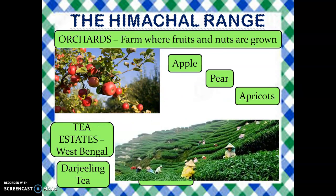The Himachal Range is also famous for orchards. Orchards are farms where fruits and nuts are grown. Famous apple, pear, and apricot orchards are found in the Himalayan Range. Also in the state of West Bengal, there is a place called Darjeeling in North West Bengal which has famous tea estates, and Darjeeling tea is famous all over the world.